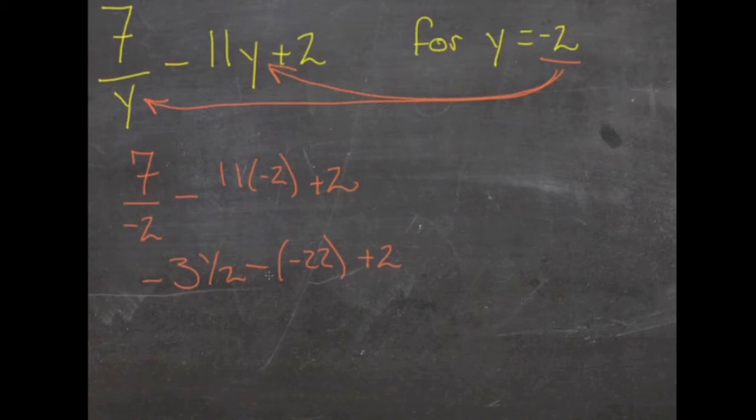Negative 3 and a half minus negative 22 plus 2. When we subtract a negative, that means we're adding. So that can be negative 3 and a half plus 22 plus 2.